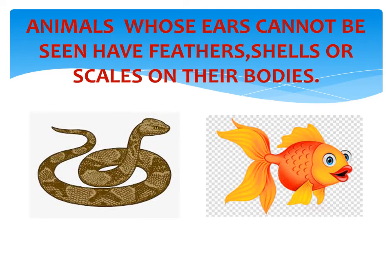Now I have taken a picture of a snake and a fish. The heading is: animals whose ears cannot be seen have feathers, shells, or scales on their body. Through this slide I want to make clear that animals whose ears cannot be seen don't have hair on their body — instead they have feathers, shells, or scales. The snake has a hole for its ear which cannot be seen, and it has scales on its body. The fish also has scales on its body and its ears cannot be seen.